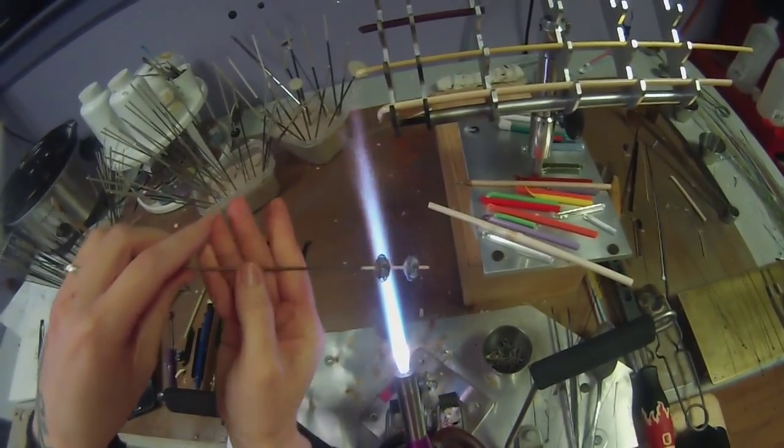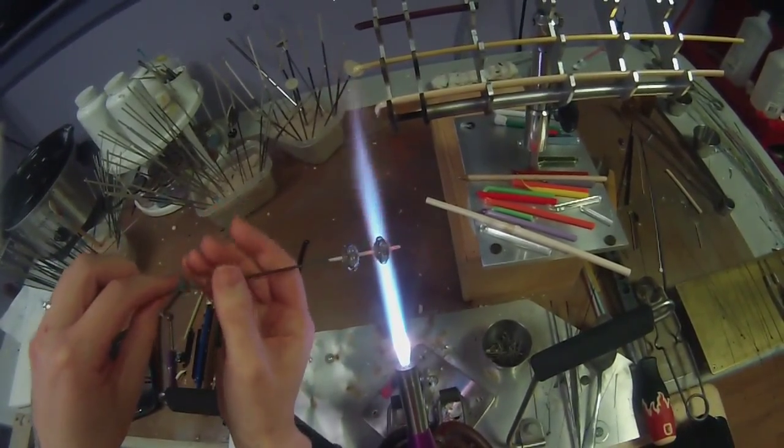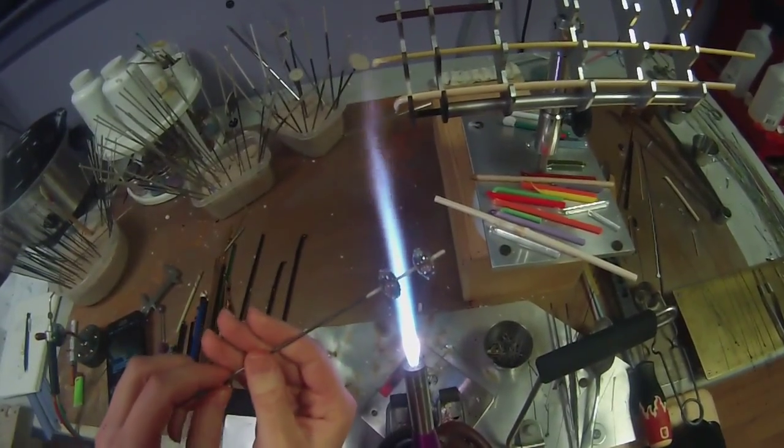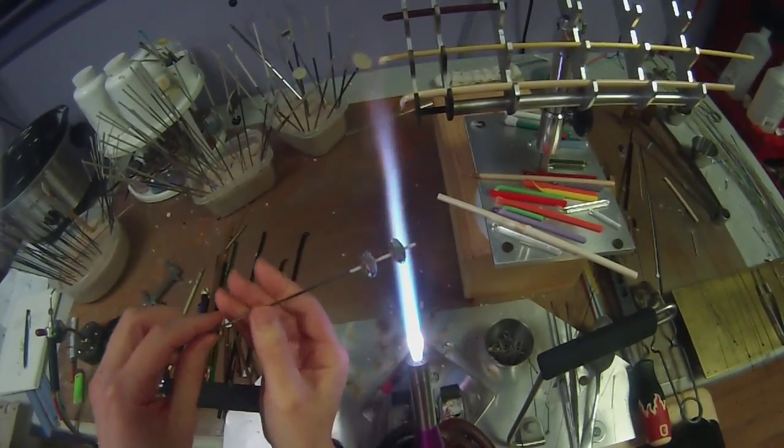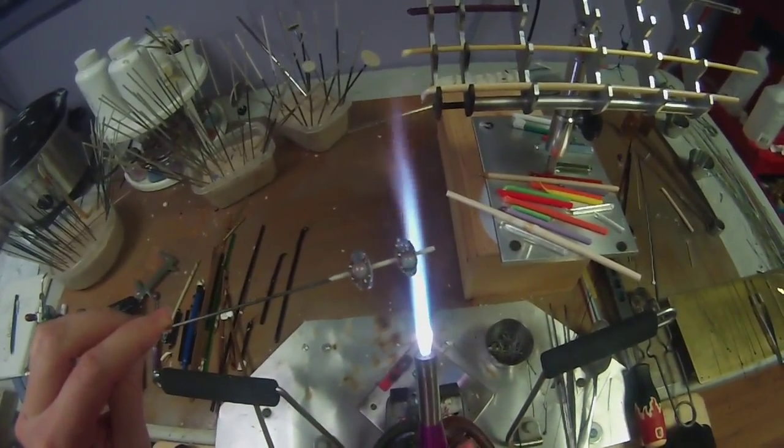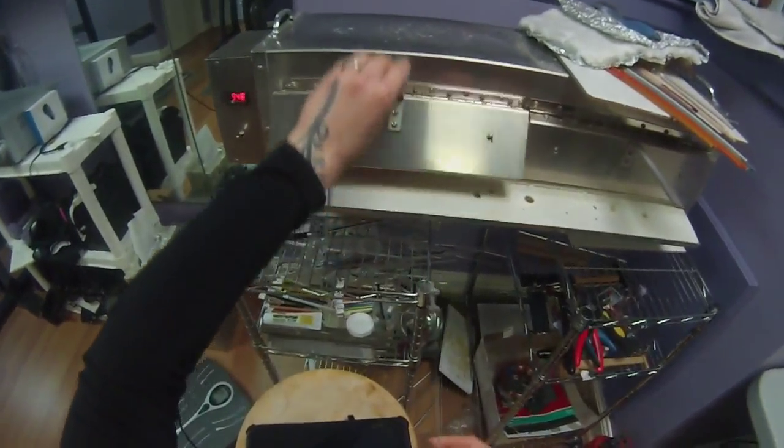Again, just gently rolling them through the flame. I don't want to heat the bead too much. I'm just trying to make sure that it brings the silver to the surface. And that's it. All done.